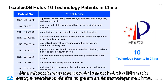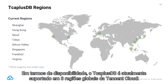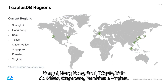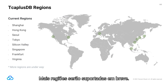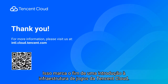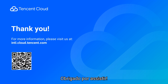A reflection of its industry-leading database capabilities, TCAP Plus DB holds 10 technology patents in China. TCAP Plus DB is currently supported in eight global Tencent Cloud regions: Shanghai, Hong Kong, Seoul, Tokyo, Silicon Valley, Singapore, Frankfurt, and Virginia, with more regions coming soon. This marks the end of an introduction to Tencent Cloud's gaming infrastructure. Thank you for watching.